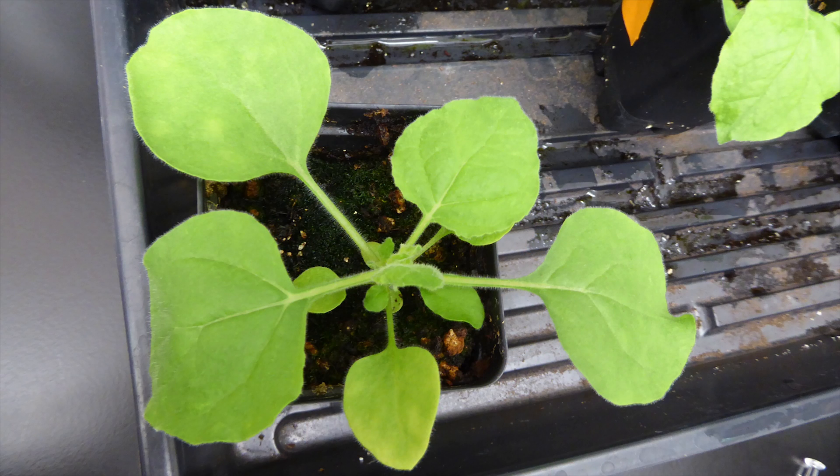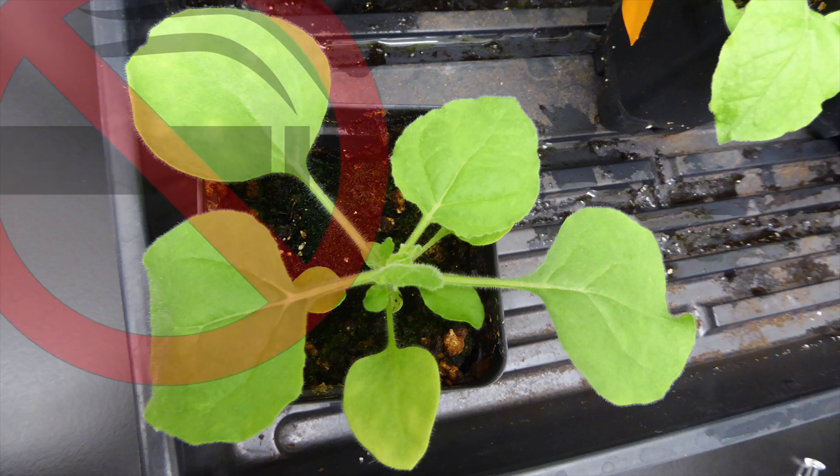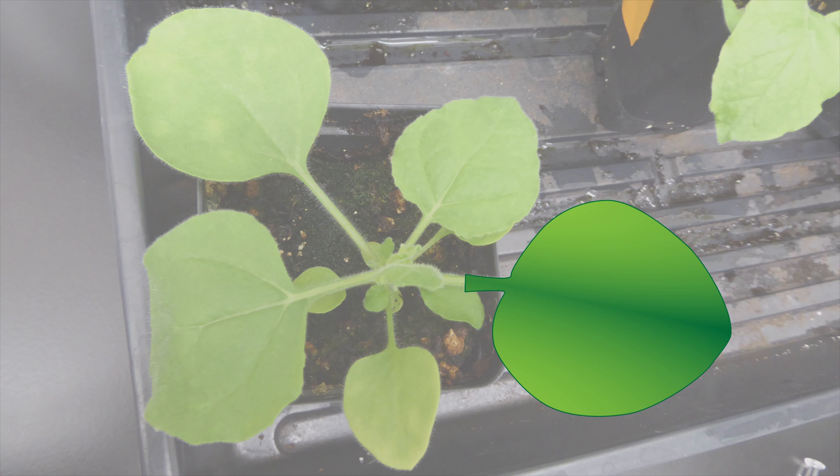When scientists have identified a gene of interest, they can check what it does by putting it in a tobacco leaf. No, not that kind of tobacco, but it's in the same genus. Young tobacco plants have large flat leaves that are easy to use for this kind of experiment.